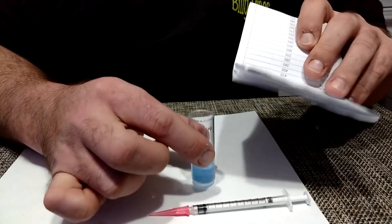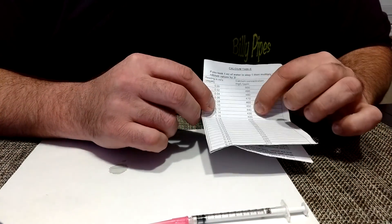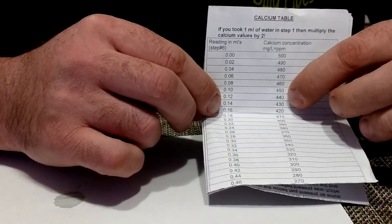Now if I look at the .12 on my grid, my calcium is at 440.